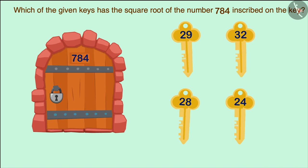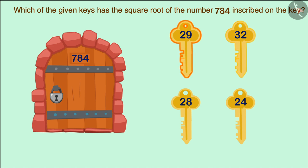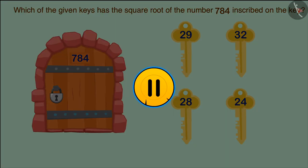But the condition is that the number inscribed on the key should be equal to the square root of 784. Can you tell which of the keys on the screen will open this lock? You may pause the video here and solve the question yourself.